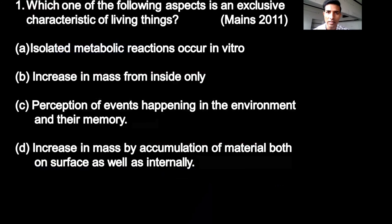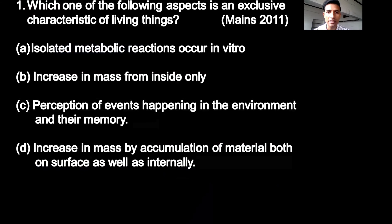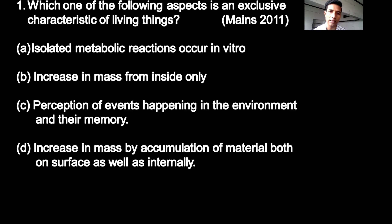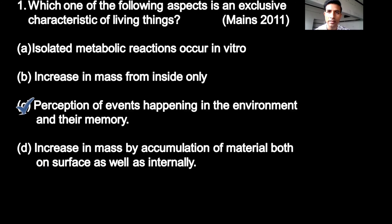The first question: Which one of the following aspects is an exclusive characteristic of living things? Option A: Isolated metabolic reactions occur in vitro. Option B: Increase in mass from inside only. Option C: Perception of events happening in the environment and their memory. Option D: Increase in mass by accumulation of material both on surface as well as internally. The correct answer is C — perception of events happening in the environment and their memory.